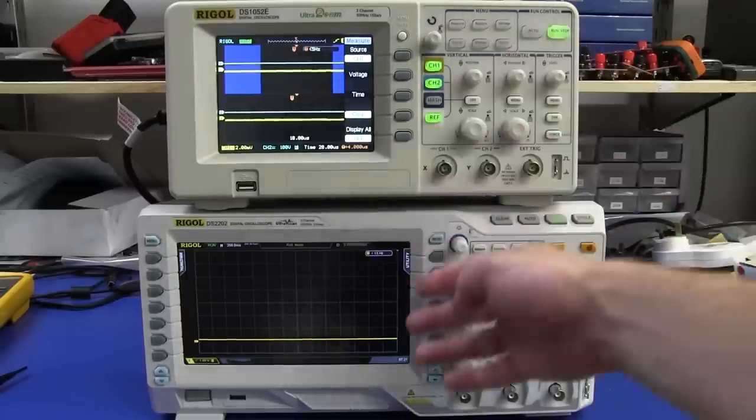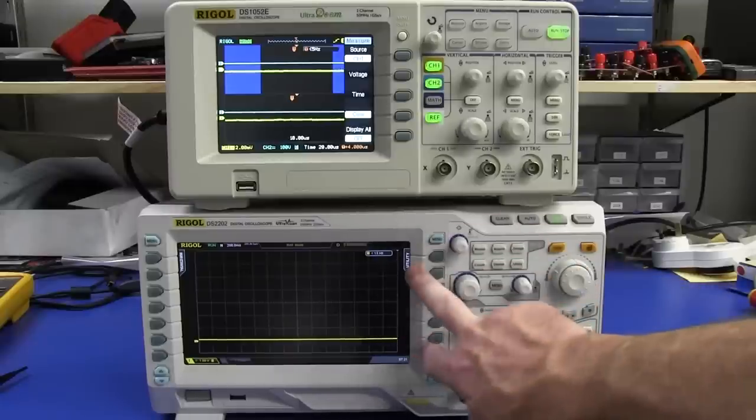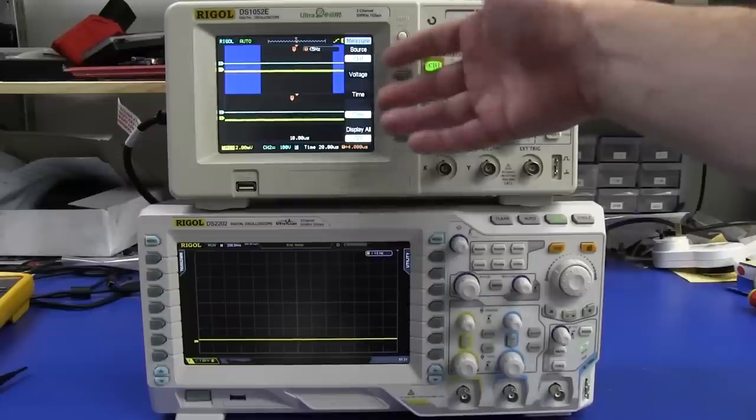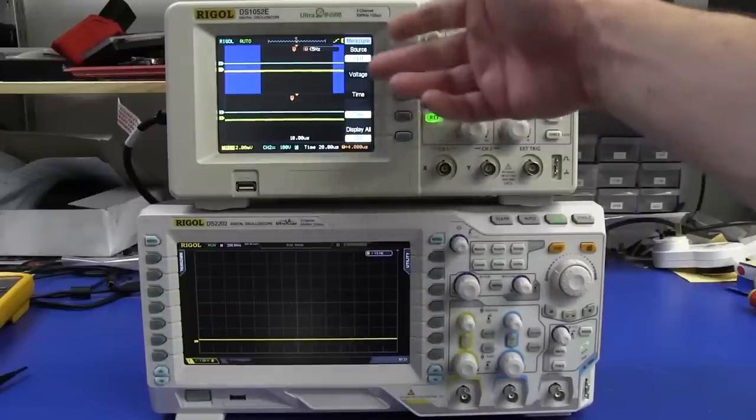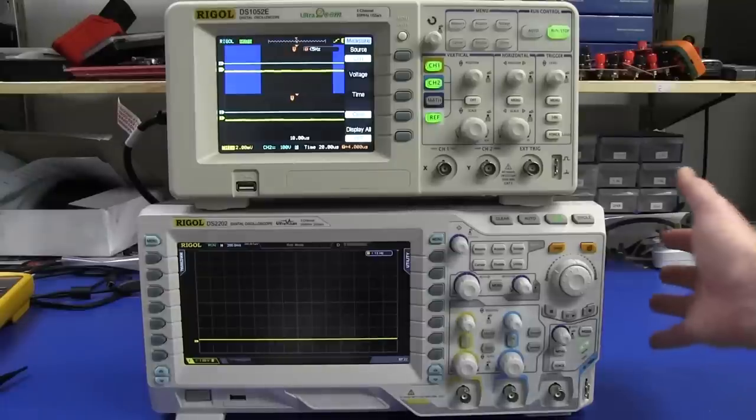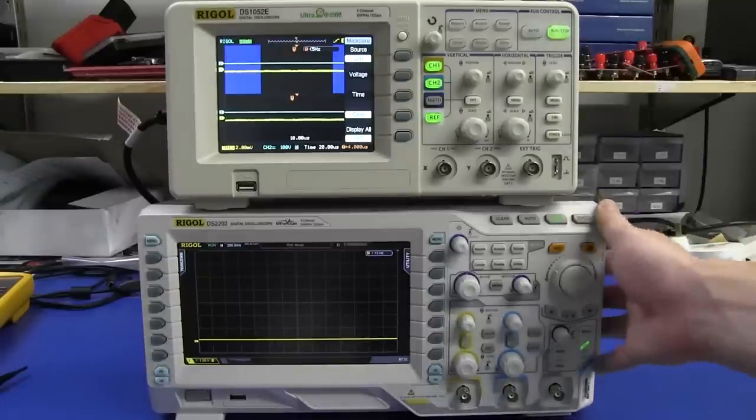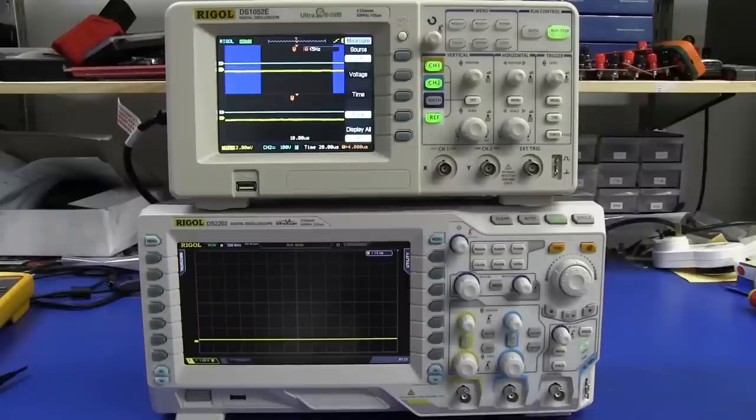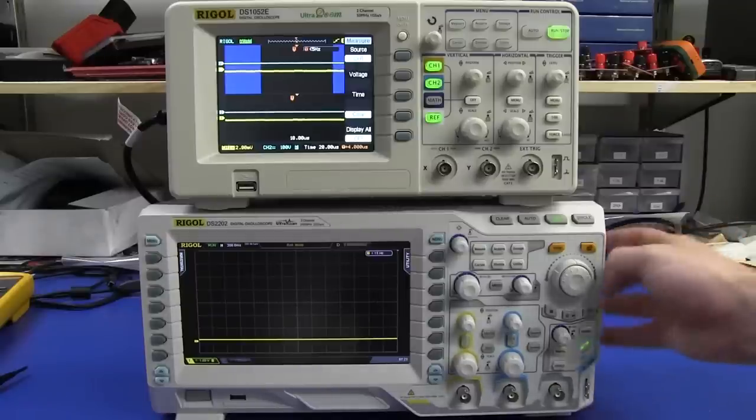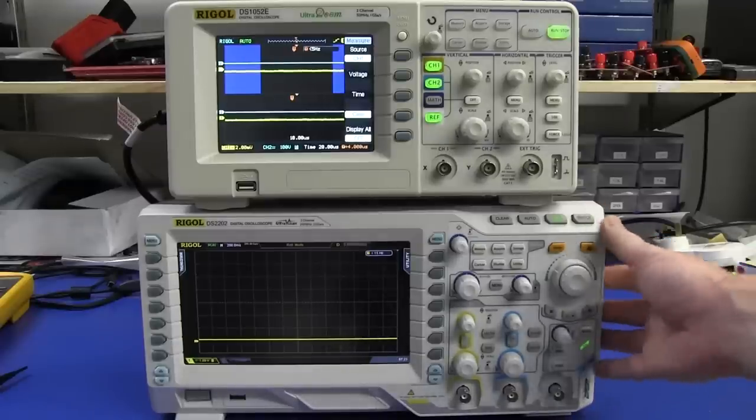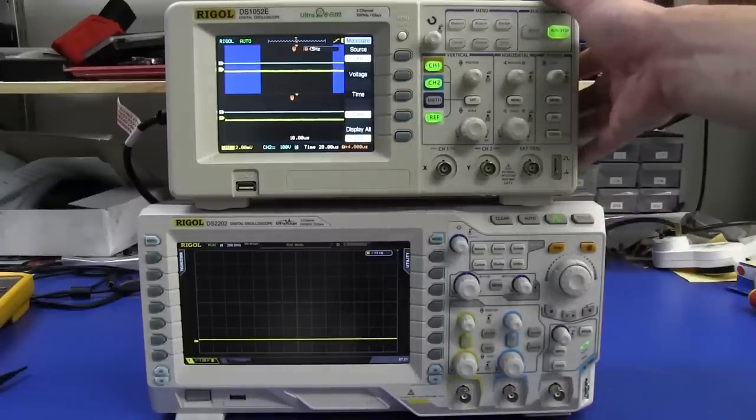One of the biggest things is the display. Much bigger display at 800 by 480, whereas this one is only 320 by 240. This one is brighter though, but no contest. They've upped the minimum bandwidth to 70 megahertz from 50 megahertz in the 1000 series. We won't go into the differences with the hack and stuff like that. Unfortunately, the bandwidth is not software upgradeable in this thing, which is a bit of a bummer. And we've got two gig samples per second as opposed to one gig samples per second.